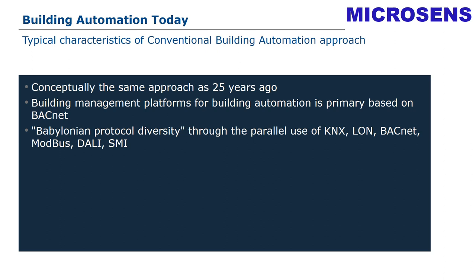Another typical characteristic of conventional building automation is the parallel use of many different protocols and systems, such as KNX, LON, BACnet, Modbus, DALI, or SMI. I refer to this as 'Babylonian Protocol Diversity,' because this description stands very aptly for the parallel use of many languages within a single building automation system.